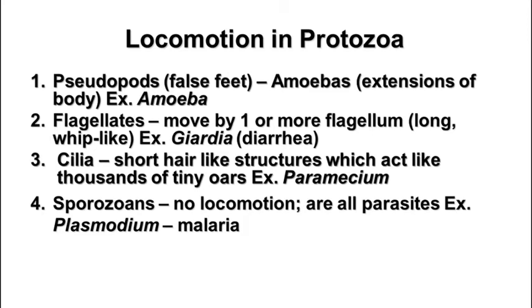The third group is the ciliates. They move by means of cilia, which are short hair-like structures, similar to flagella in structure but much shorter and there are many more of them. They can move together like oars on a ship, and an example of a ciliate is paramecium. The fourth group is the sporozoans, which generally do not have a method of locomotion. They are all parasitic. An example is plasmodium, which causes malaria.